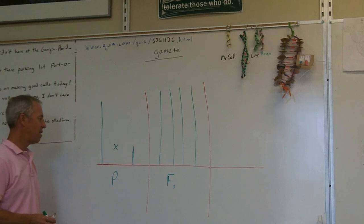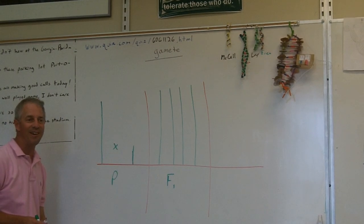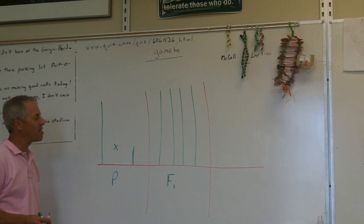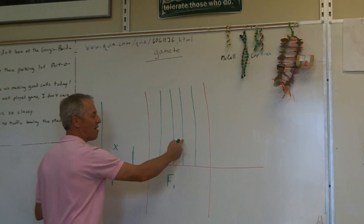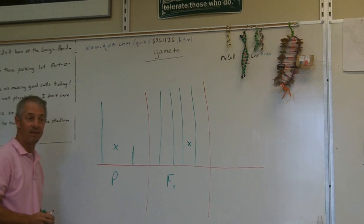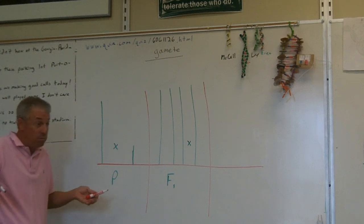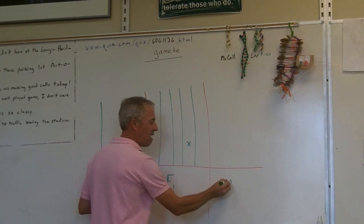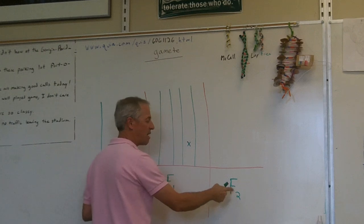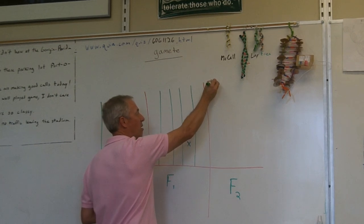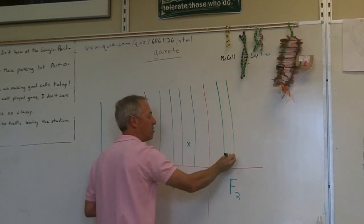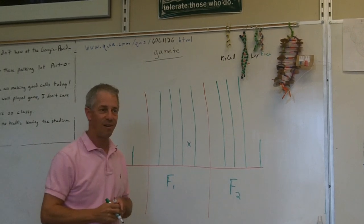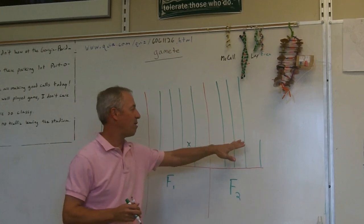Mendel said, I got all talls — that's kind of weird. What do you think would happen if I mated two of these F1s together? So he did it. He mated the F1s with one another and got what he called the F2 generation — the second generation of brothers. And what did he get? Tall, tall, tall, short. Three talls to one short. He called that a three-to-one ratio.